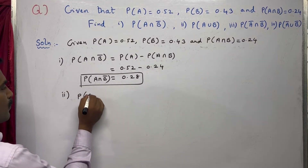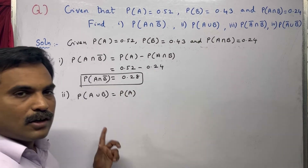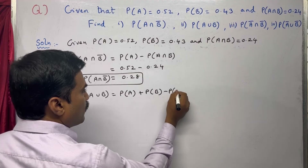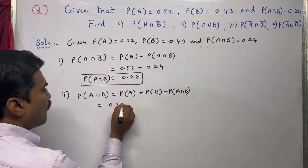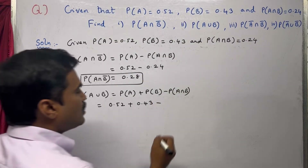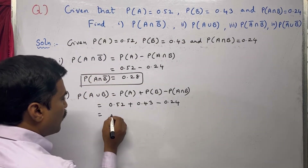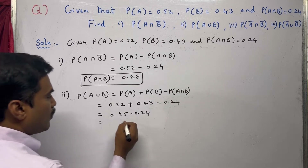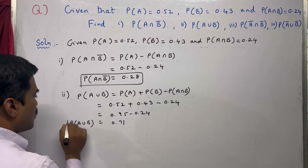The second one is P(A∪B). Using the formula: P(A∪B) = P(A) + P(B) − P(A∩B). Substituting: 0.52 + 0.43 − 0.24. First we add the two terms: 0.52 + 0.43 = 0.95, then subtract 0.24 to get 0.71. So P(A∪B) = 0.71. The second part is complete.